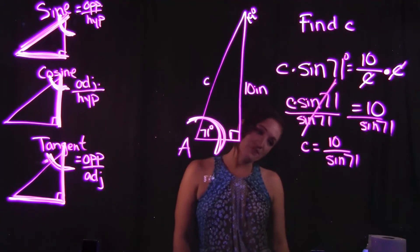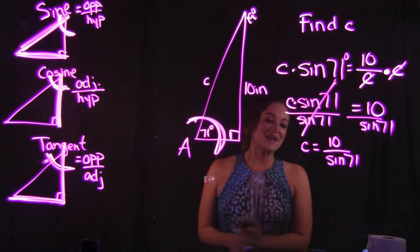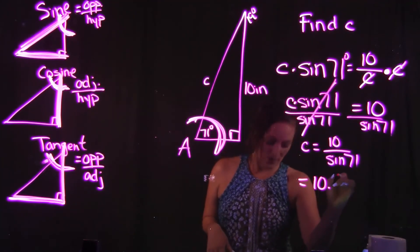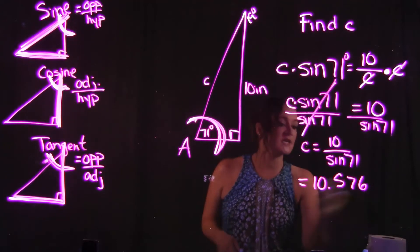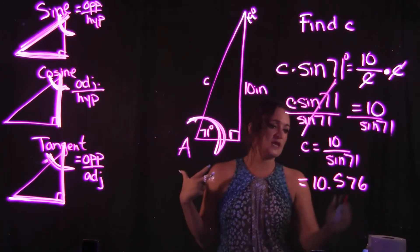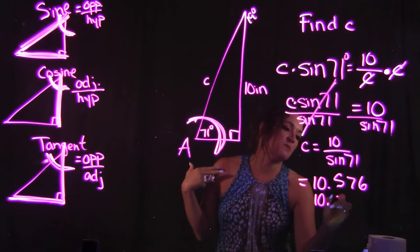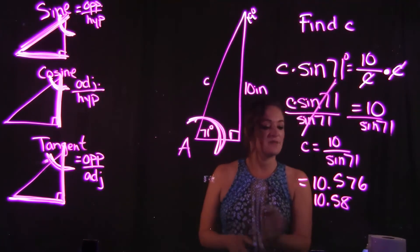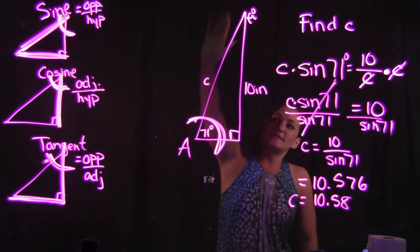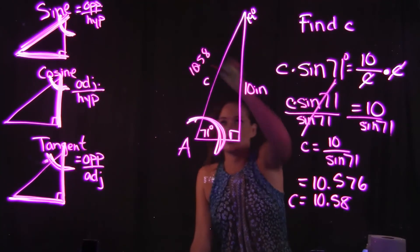To finish the problem, we just do that division: 10 divided by sine 71 gives us 10.576. Rounding to two decimal places, C equals 10.58 inches.